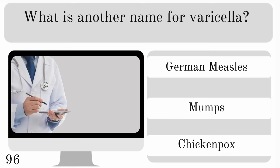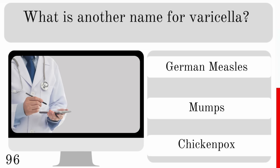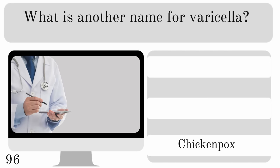What is another name for varicella? Is it German measles, mumps or chicken pox? The correct answer is chicken pox.